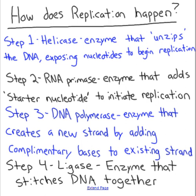Step one is the enzyme helicase. If you remember from the previous video on DNA structure, nitrogen bases are held together by hydrogen bonds. So step one is we need to separate the DNA so that we're able to replicate it. We're going to separate the nitrogen bases the same way you separate a zipper on a coat. We unzip the DNA with helicase, and that exposes the DNA so that we can add new nucleotides.